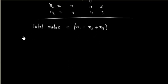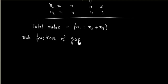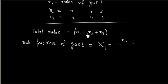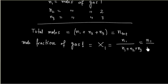Now we define something called mole fraction. If I say mole fraction of component 1 or gas 1, in short this is denoted by X with subscript 1. This is moles of 1 divided by total moles: N1 divided by N1 plus N2 plus N3, or we can write this as N1 divided by N_total.